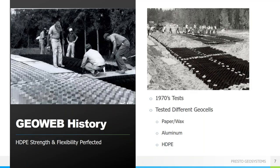Presto worked with the Army Corps of Engineers to develop geocell technology. Many different materials were tested, including aluminum, cardboard, and wax paper, but in the end, high-density polyethylene, or HDPE, was the chosen material due to its lightweight, flexible nature and the fact that it is inert to nearly all chemicals and climate conditions. We extrude sheets of HDPE, cut them to the proper cell depth, and ultrasonically weld them together.